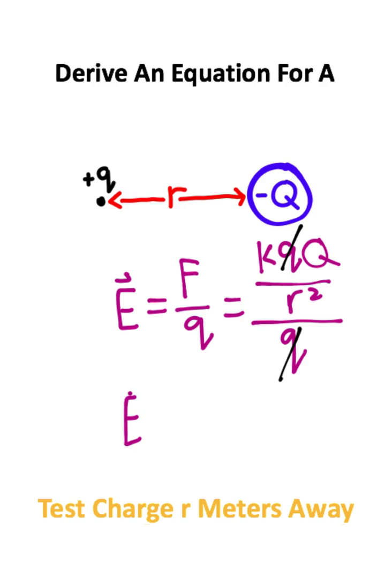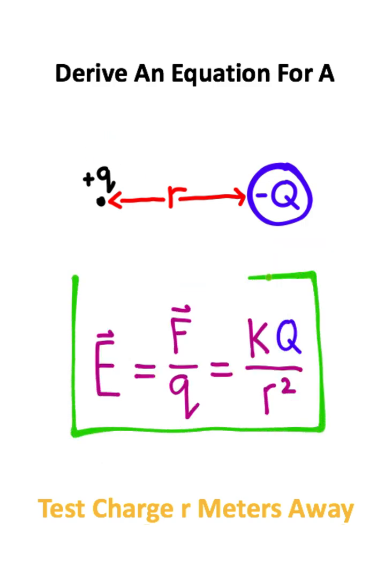So for our electric field, we're going to end up with k times big Q divided by r squared. And this is the equation you would need to handle this situation. These are the relationships and equations you need to know when handling electric field situations.